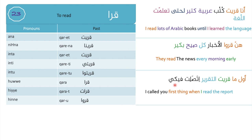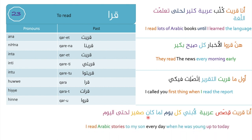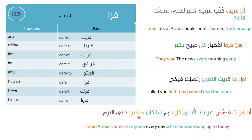Our final example: 'Ana rayt asas arabiyya la ibni kil-yum lamma kan sghir lahatta il-yum' — I read Arabic stories to my son every day when he was young, until today. 'Asas' means stories, 'arabiyya' means Arabic, 'la ibni' means to my son, 'kil-yum' means every day, 'lamma kan sghir' means when he was young.